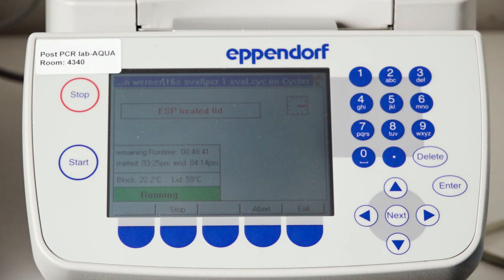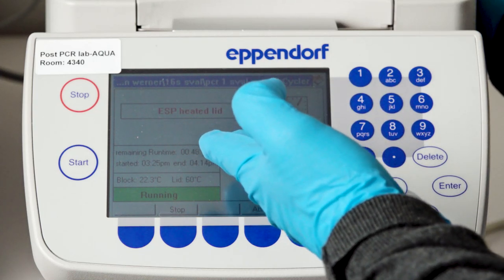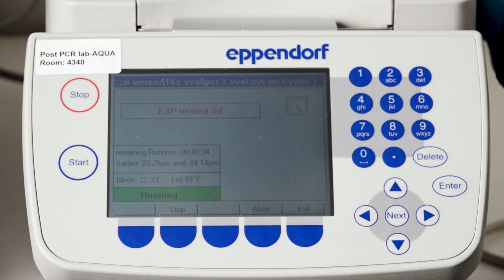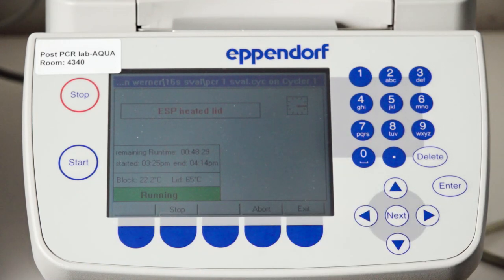Now it says that it's heating, the approximate amount of time that is left. So this is around 50 minutes. It also says the temperature and says running, and the light here is blinking.